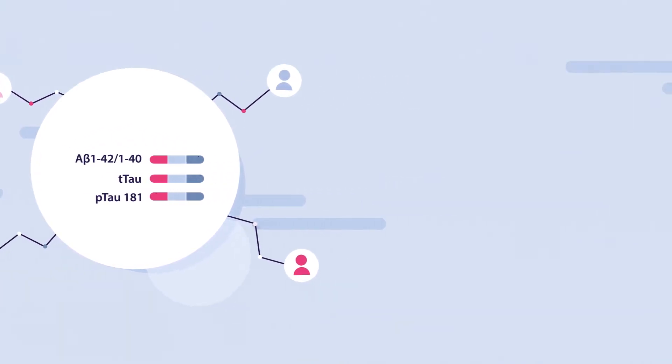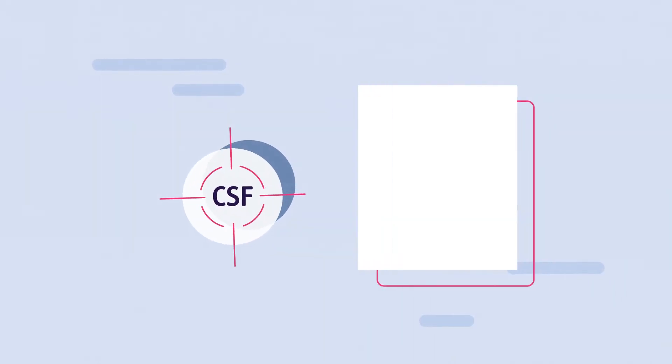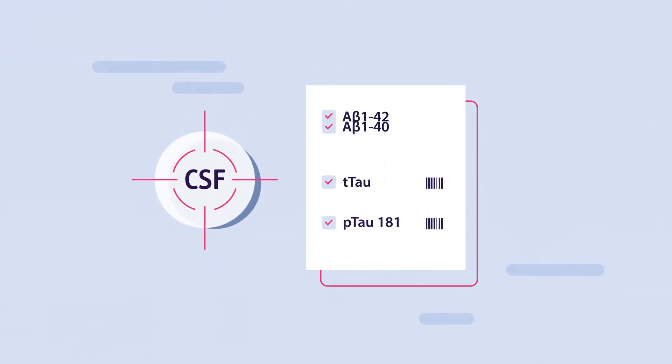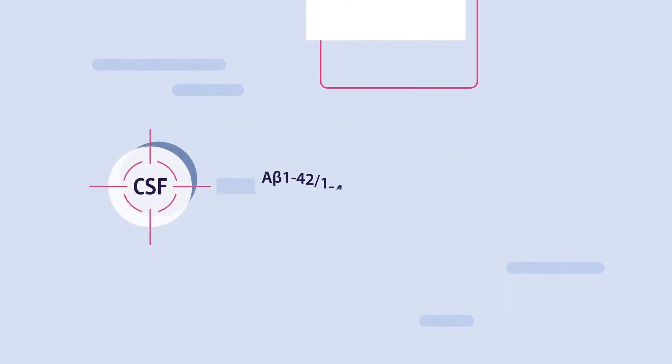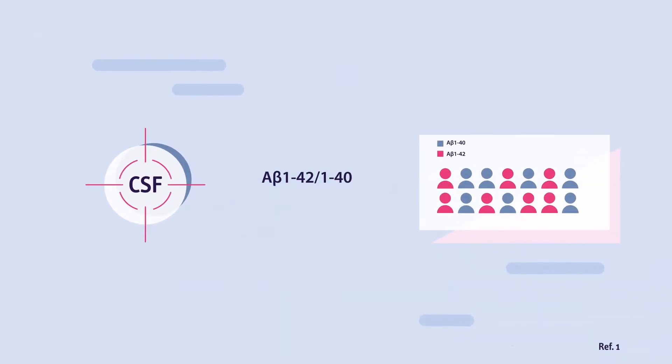The accuracy of this CSF biomarker profile is further boosted through the calculation of the so-called amyloid ratio. This ratio has several advantages, all resulting in improved clinical accuracy.